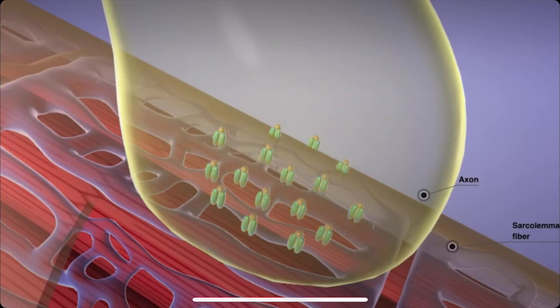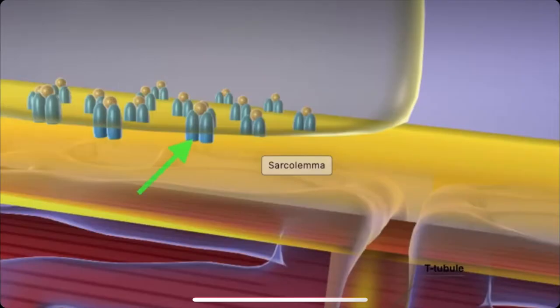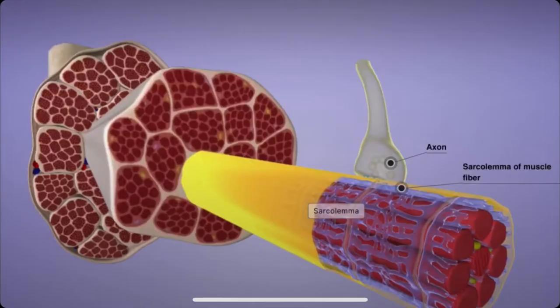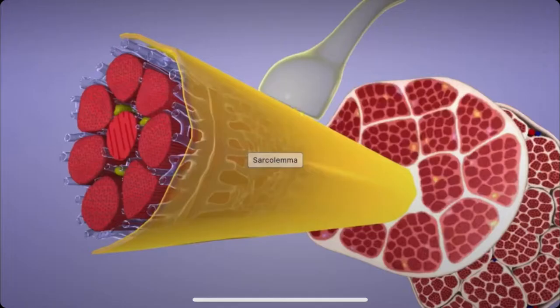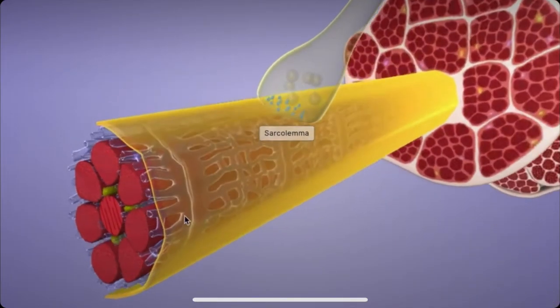When the signal hits this junction, it causes the release of a neurotransmitter called acetylcholine, which binds to receptor sites on the sarcolemma of the muscle. The sarcolemma is a cell membrane that surrounds muscle cells and acts as a barrier between the cell and its environment.